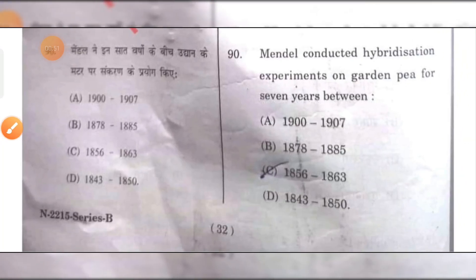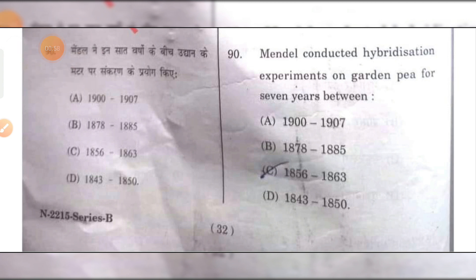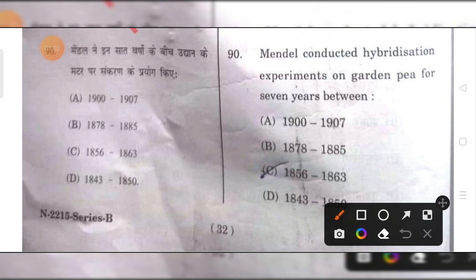Mendel conducted hybridization experiments on garden pea for 7 years, from 1856 to 1863. C is the right answer.